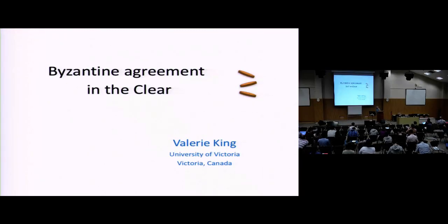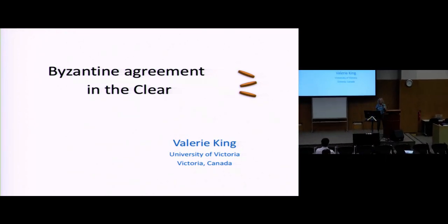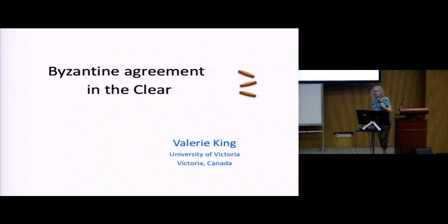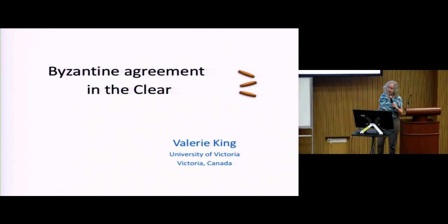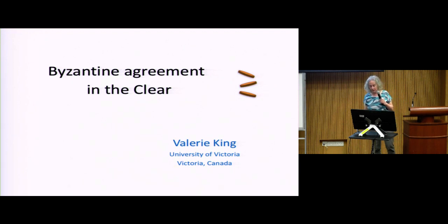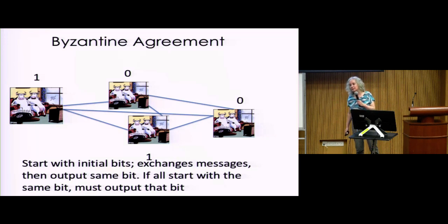The second talk is on Byzantine agreement in the clear — what you can do without cryptography. Again, everybody starts with a bit and exchanges messages. Now there's more interest in Byzantine agreement because of distributed ledger and blockchain. The parties are not just pieces of a network system but users on the internet, and there may be malicious or selfish people out there. So it's a different game with more interest in handling malicious behavior.